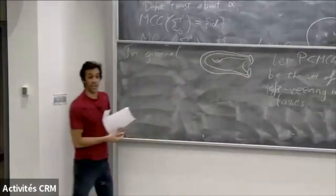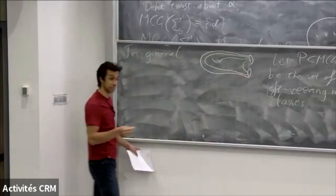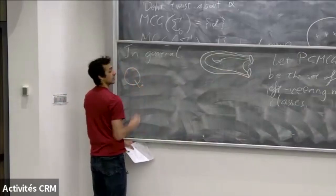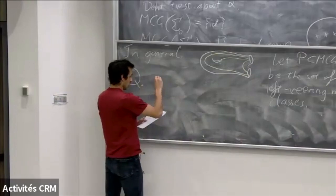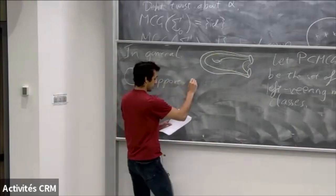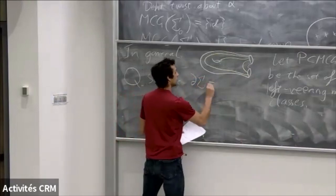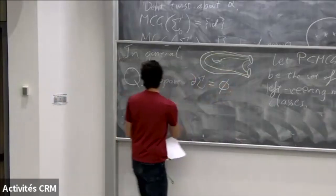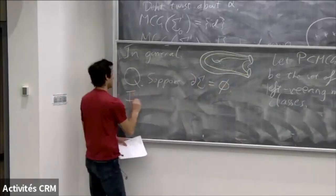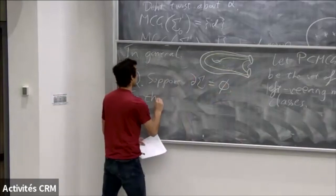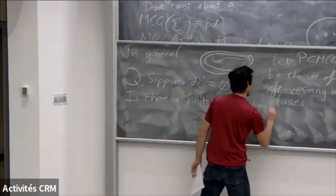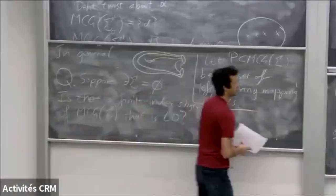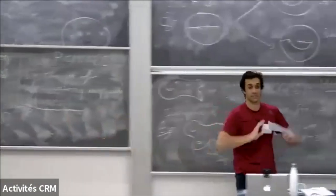I'm going to advertise an open question that came out during the problem session last week. Suppose you had no boundary — is there a finite index subgroup of MCG that is left orderable? I'm not going to talk about that question, I just wanted to advertise it.